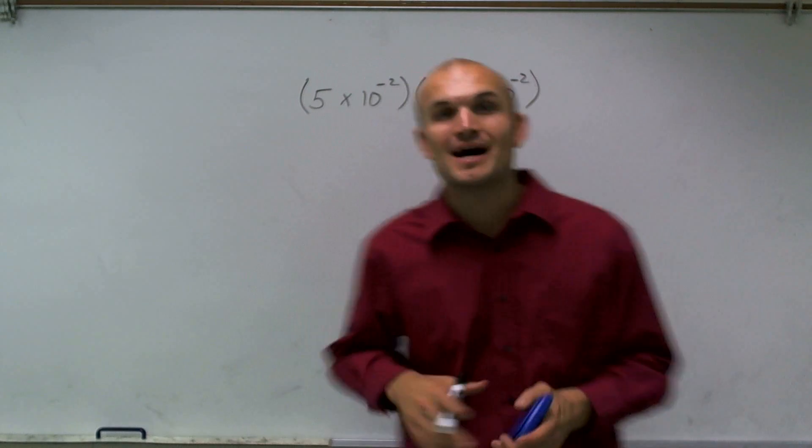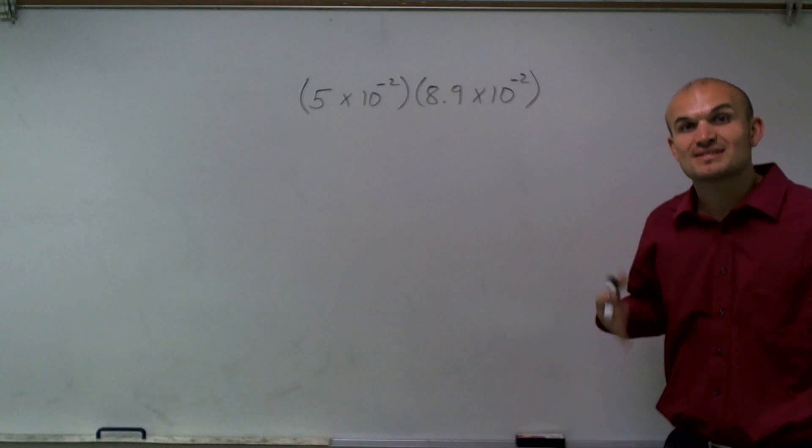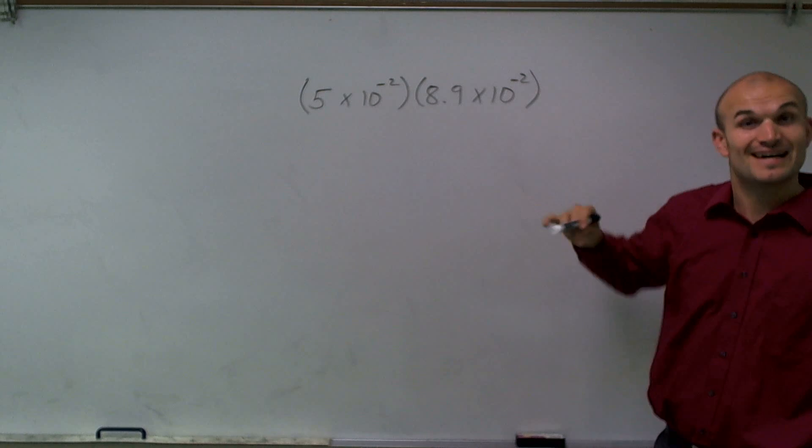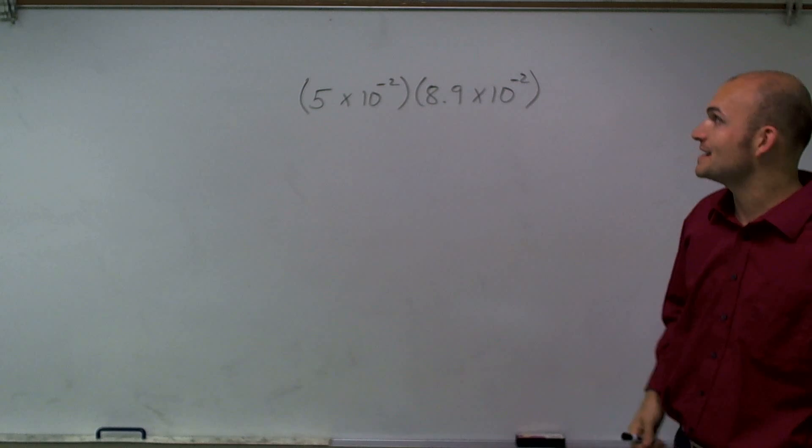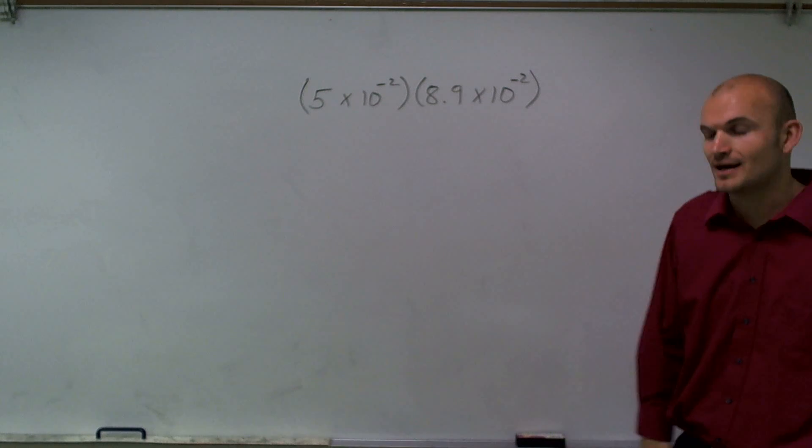Welcome. What I want to do today is show you how to multiply two numbers in scientific notation, but they're actually very, very small. As you can see, we have negative exponents up here.